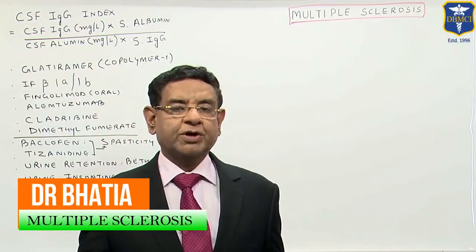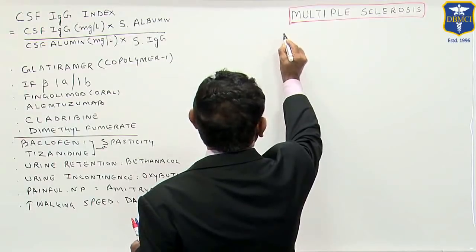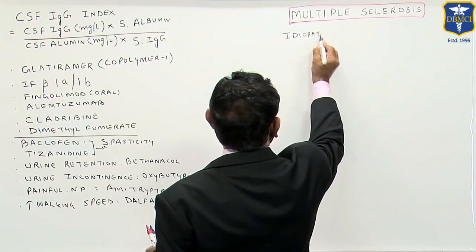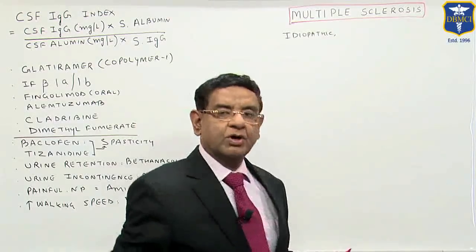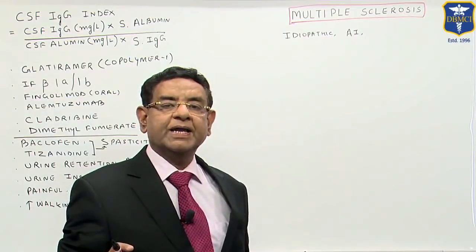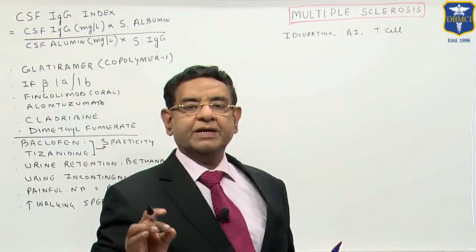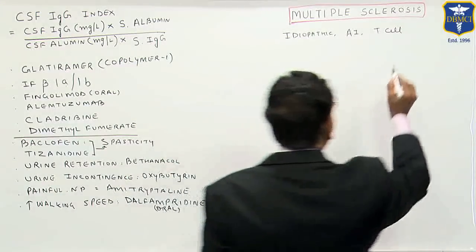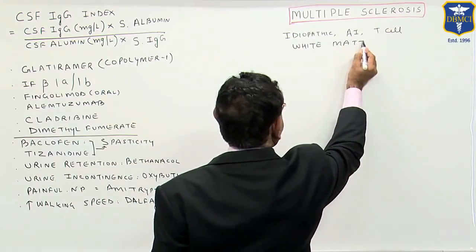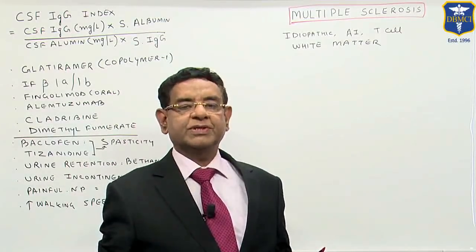Hello friends. I will be talking to you about multiple sclerosis. It is an idiopathic autoimmune disorder, usually T-cell mediated, and it primarily affects the white matter of the CNS. It is almost exclusively a disease of the CNS.